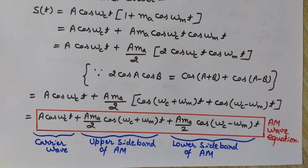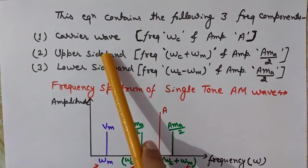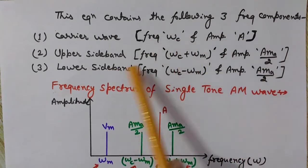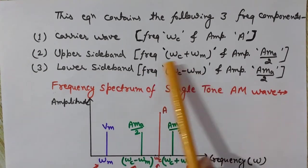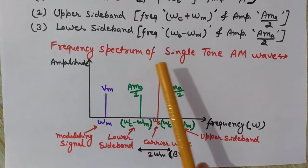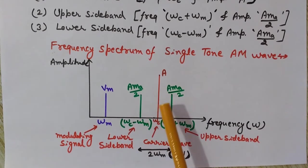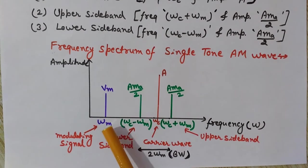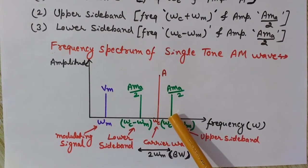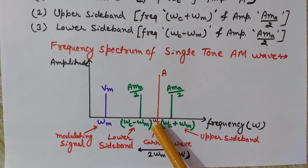Now we will see the frequency spectrum of this wave. The equation has three frequency components: the carrier wave with frequency ωc and amplitude A; the upper sideband with frequency ωc+ωm and amplitude A·ma/2; and the lower sideband with frequency ωc−ωm and the same amplitude A·ma/2. The frequency spectrum is a graph between frequency ω and amplitude.